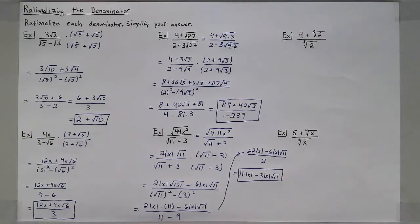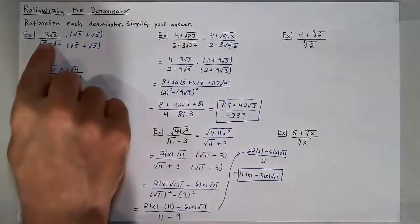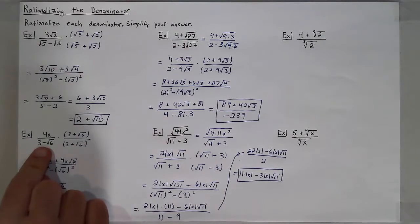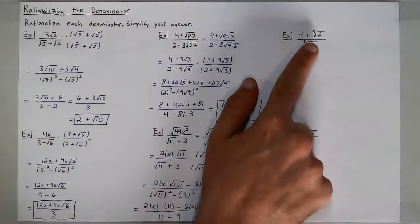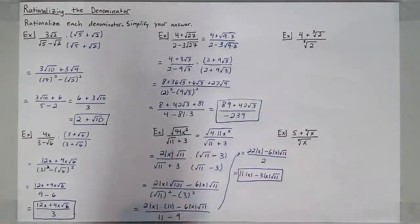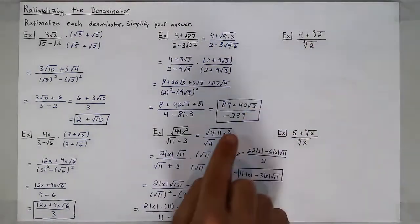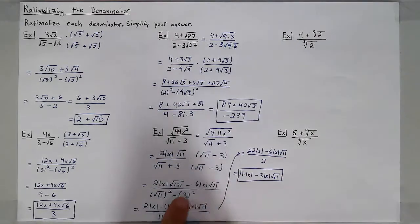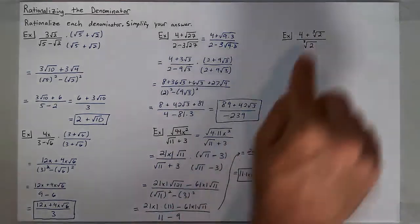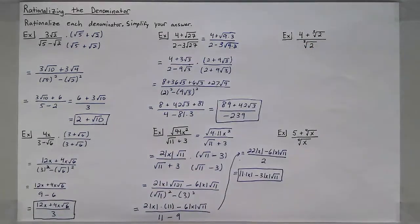I have only been doing square roots so far because the conjugate method only works with square roots. When you have a cube root or even a fourth root, the way you rationalize those will be a different method — you can't just multiply by the same thing and expect squaring it to get rid of a cube root. The difference of squares wouldn't work here.